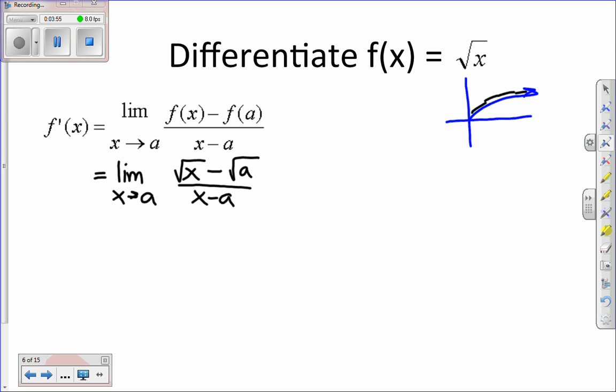Now, again, we're looking for the limit. Now, nothing reduces here. I can't factor anything. And if I substitute a for x, I'm going to get a zero in the denominator. Well, another way of maybe breaking this up a little bit is let's multiply by the conjugate, the square root of x plus a.